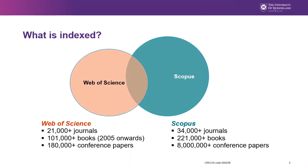Web of Science has two differences. It indexes meeting abstracts that are unlikely to attract citations, and as a result your publication count may look higher compared with Scopus. Web of Science will also flag highly cited and hot papers, which are of great significance to your publication record.